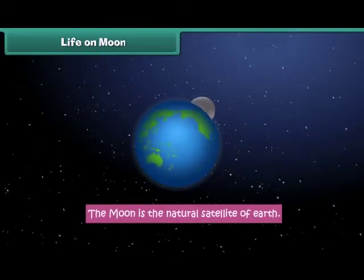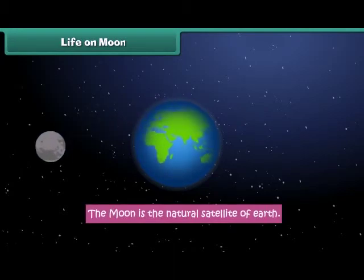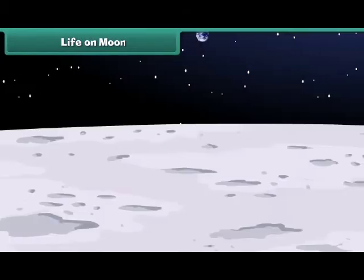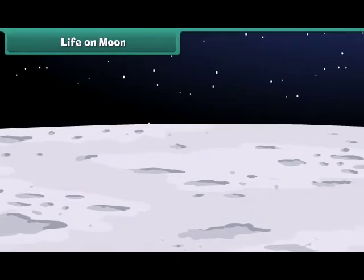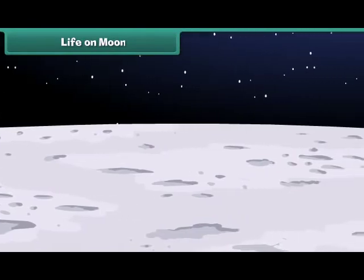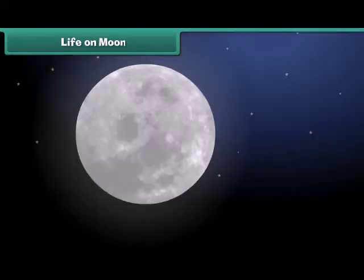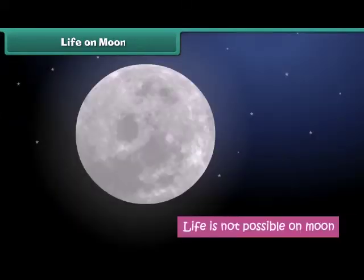Though Moon is the natural satellite of Earth, it is very different from Earth. There is no air, water or food on the Moon. Therefore, life is not possible on it.